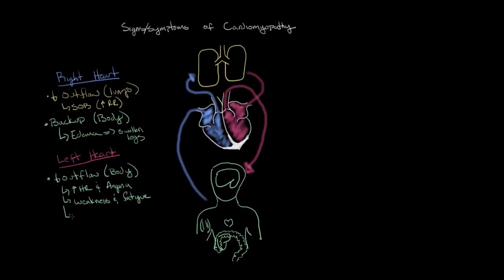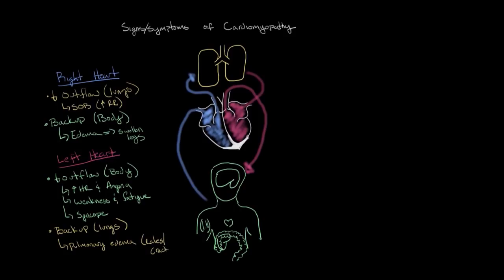In addition, this blood isn't just going to the organs in the abdomen — it's also going to the brain. When the brain doesn't get enough blood, sometimes people can faint, which is known as syncope. Just like in the right heart where blood backs up into the body, in the left heart there's also a backup, but this time, since blood is coming from the lungs, the backup goes into the lungs. When you get a backup of blood in the lungs, this results in pulmonary edema — fluid in the lungs — which can be heard with a stethoscope as a sound known as rales or crackles.